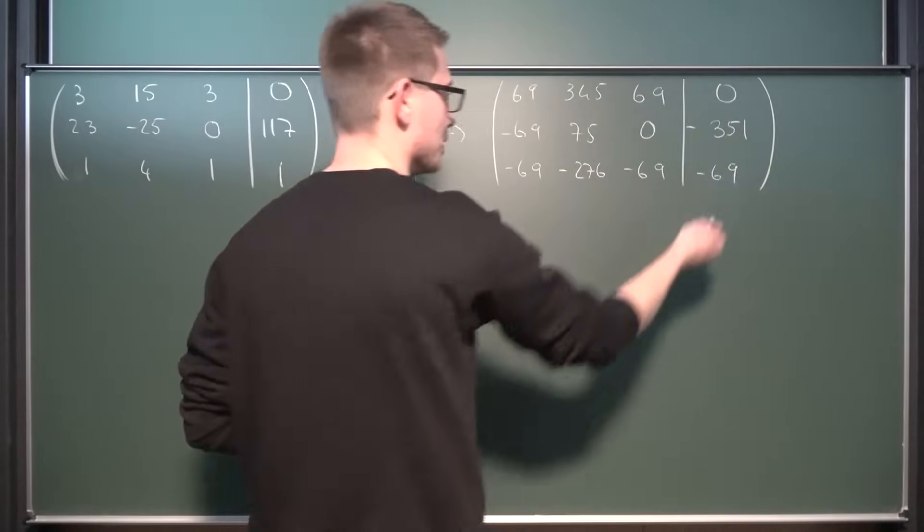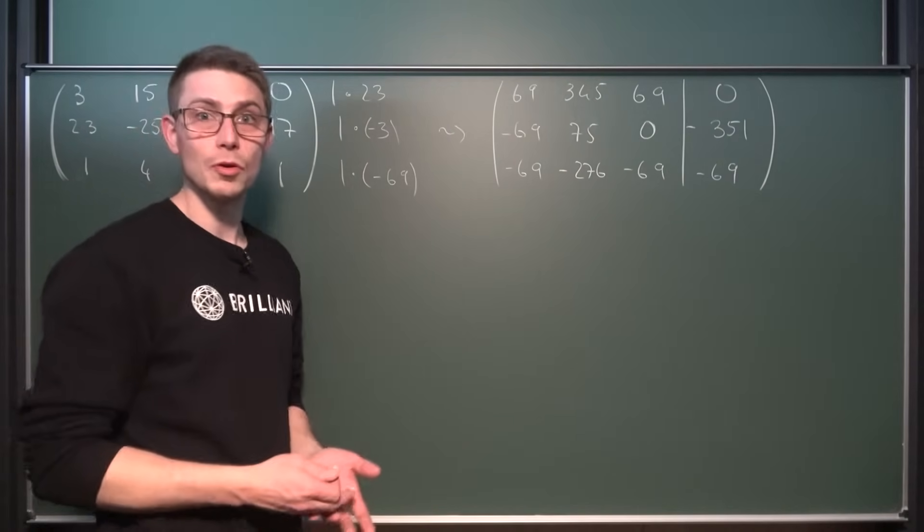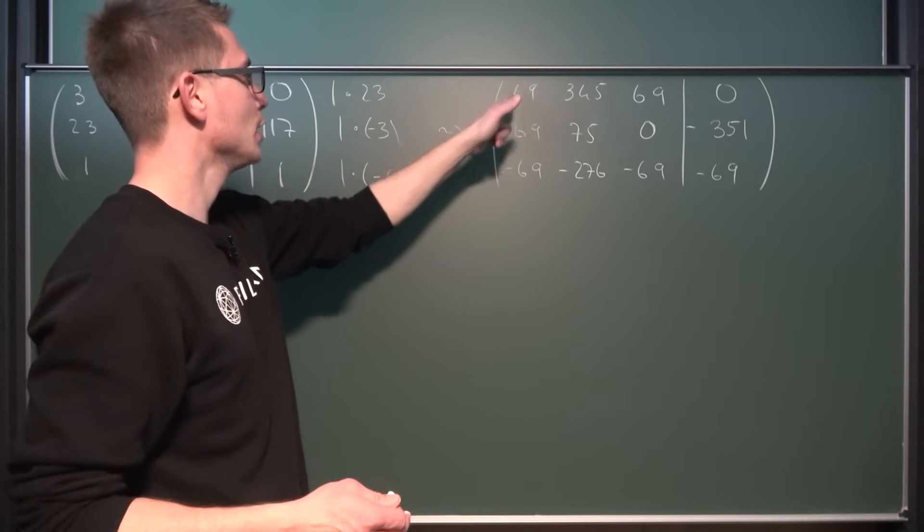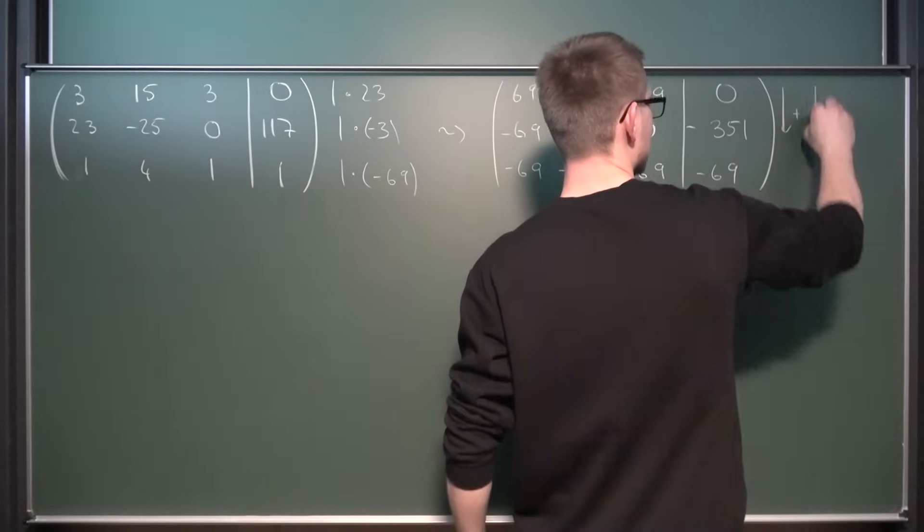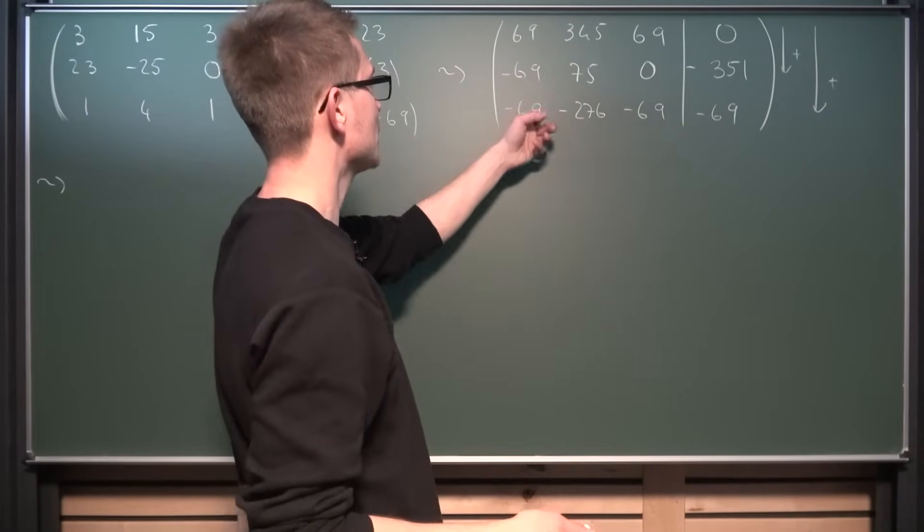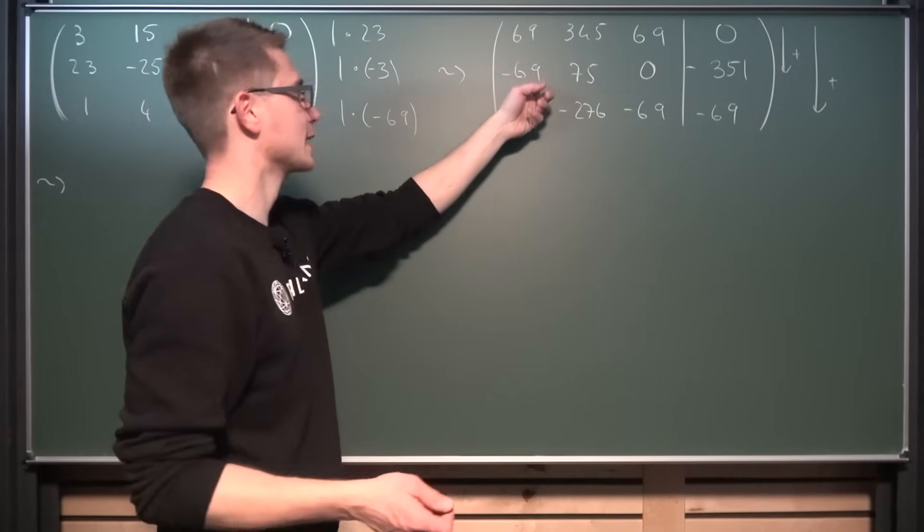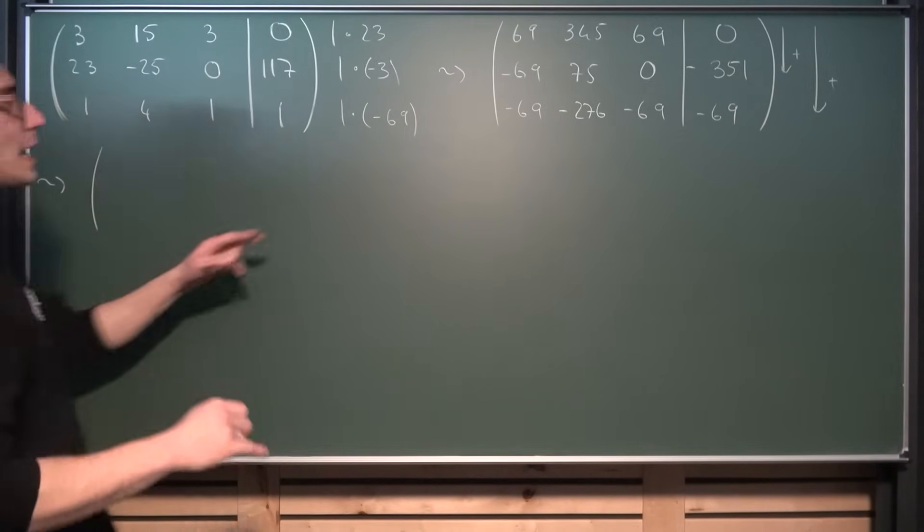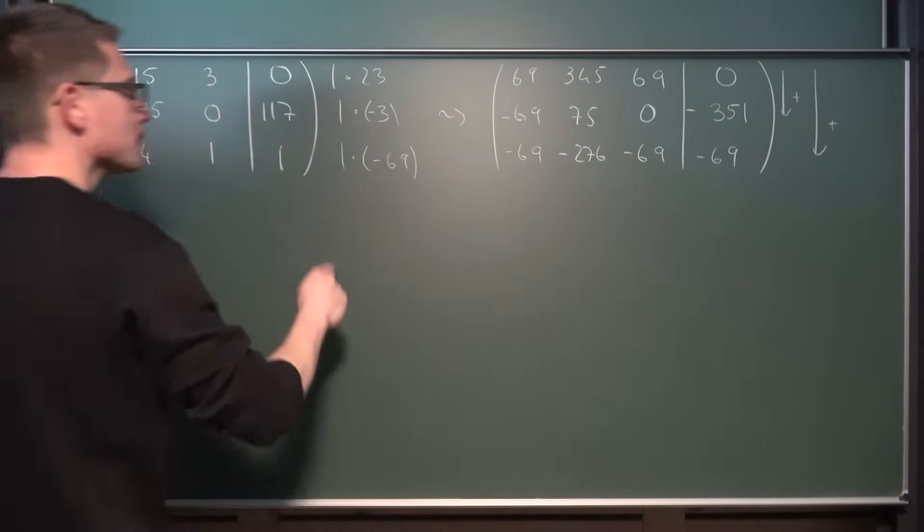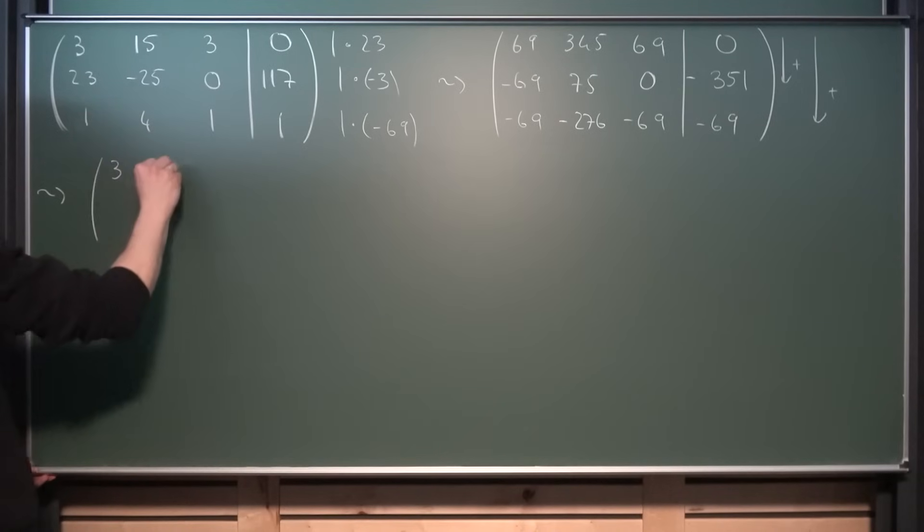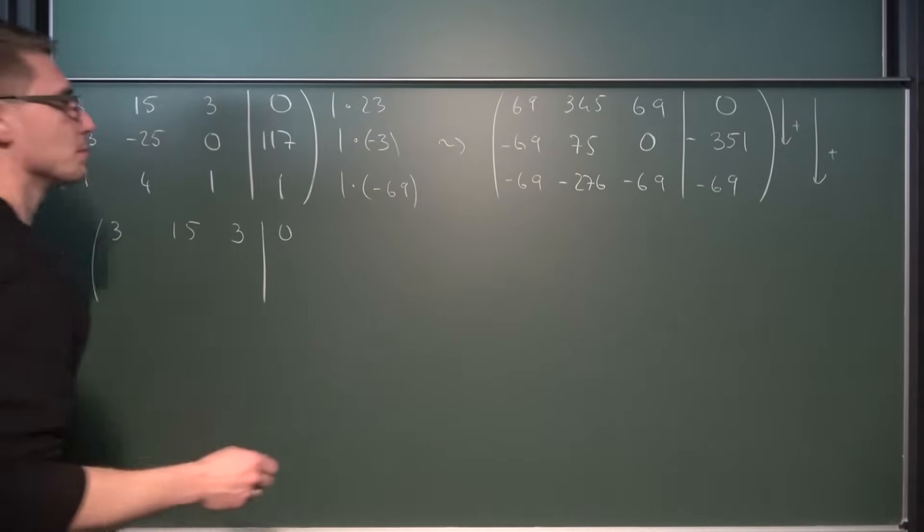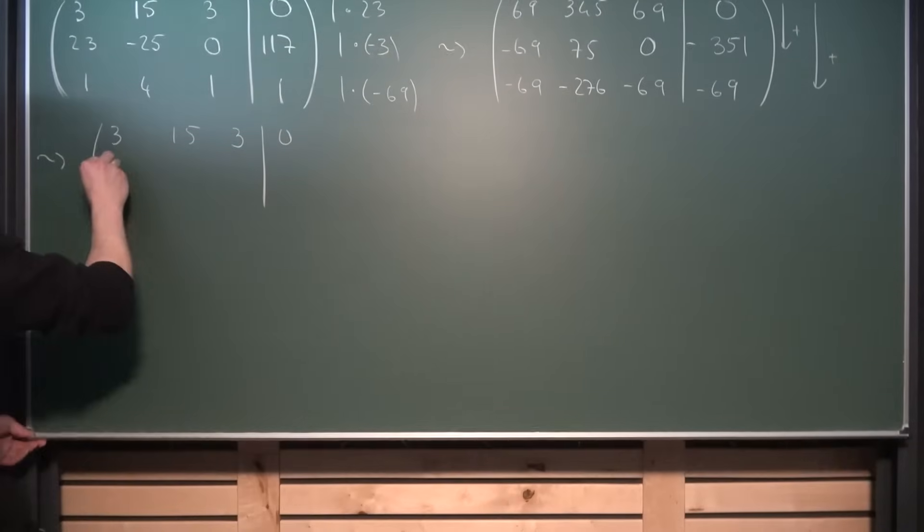Now the next thing that we are going to do is to add the first row to the other rows. So the first row onto the second row and the first row onto the third row. This is why it's called Gaussian elimination. We are going to eliminate the first entries of the second and the third row. We are going to get, and I'm going to trace everything back to the original one after this step because we can just divide by 23 and then we are going to be at the start once again. So we got 3, 15, 3, 0. Obviously I would love to keep it in that form, but for now this is just going to make a whole lot of messy stuff with the matrix.